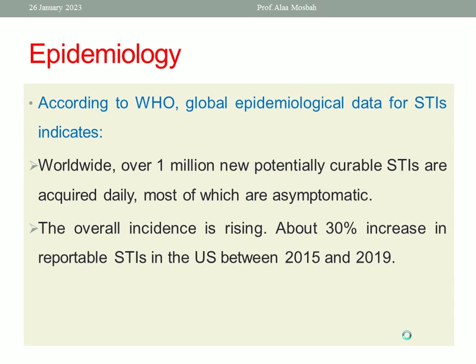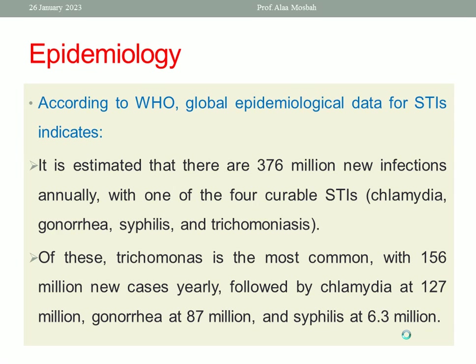Is the incidence increasing or decreasing? The incidence is really increasing — about 30% increase in reportable sexually transmitted infections in the United States between 2015 and 2019. It is estimated that there are 376 million new infections annually, each year with one of the four curable STIs: Chlamydia, Gonorrhea, Syphilis, and Trichomonas.